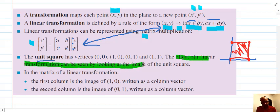In the matrix of a linear transformation, the first column is the image of (1,0), written as a column vector, and the second column is the image of (0,1), written as a column vector. And we're going to see that in the next few minutes.